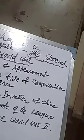Dear students of class 10A and 10B, here are some points mentioned on the board: policy of appeasement, rising tide of communism and Bolshevism, Japanese invasion of China, inactive role of the League, and Europe before World War II. First point: policy of appeasement.